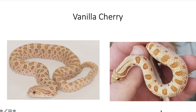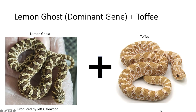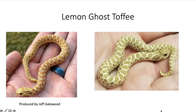Next we're going to go into another dominant gene — the lemon ghost, one of my favorite morphs of hog noses. I don't know why I don't have one in my collection — I've actually passed on it twice at reptile expos and I always regret it, but soon I will have one. The lemon ghost is a line-bred trait produced by Jeff at JMG hog noses.